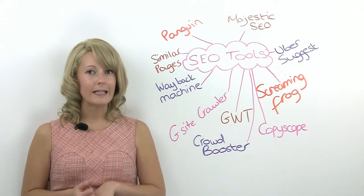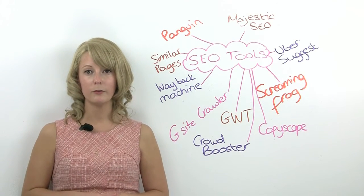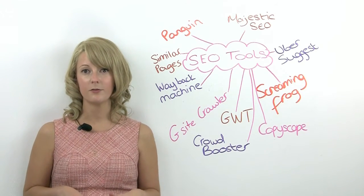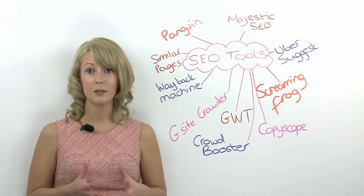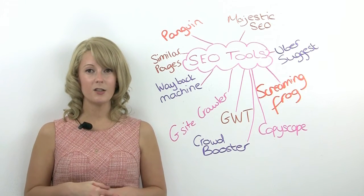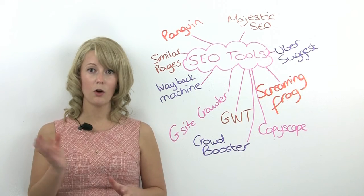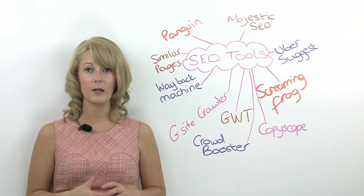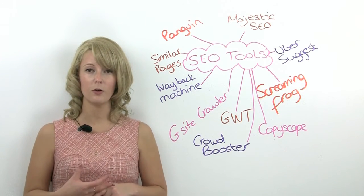Screaming Frog is a brilliant tool — it's a crawling tool and it can be used for so many different things, from sitemaps to pretty much anything. One reason I like to use it is it nicely shows you a column of your status codes so you can quickly export any 404s that you've got.